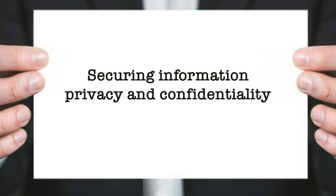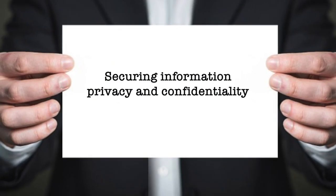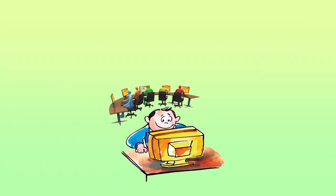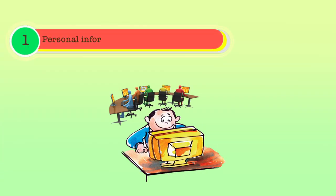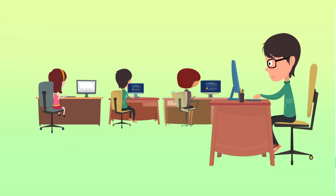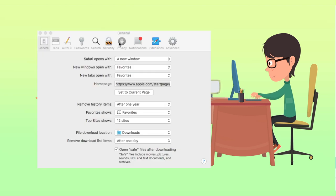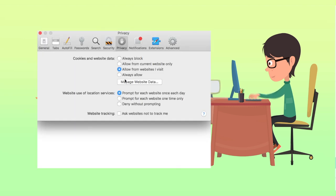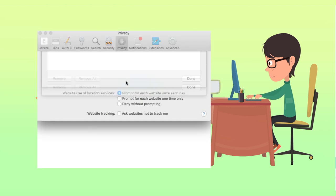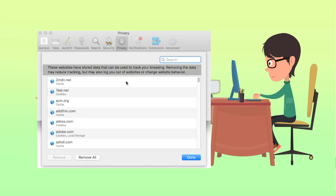Now let us have some discussion on securing information privacy and confidentiality, starting with security issues associated with personal information on public computers. While using publicly accessible computers, students or staff may unknowingly leave personal information such as cached webpages and cookies that are then available for inspection by others.